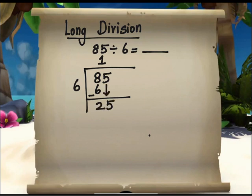25. 6 times 4. We know that 6 times 4 is 24. So let us write that down. 24. 25 minus 24 is 1.